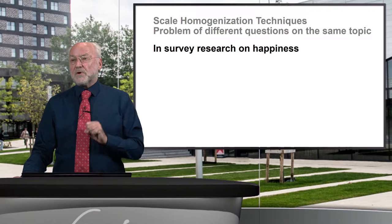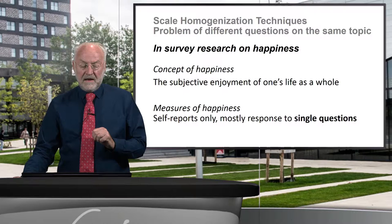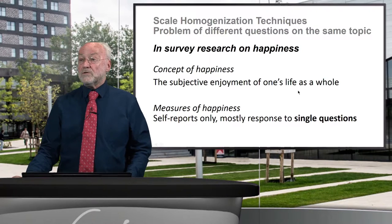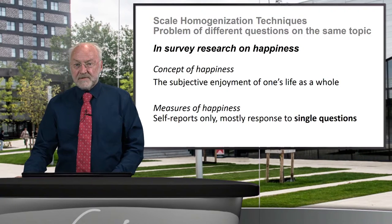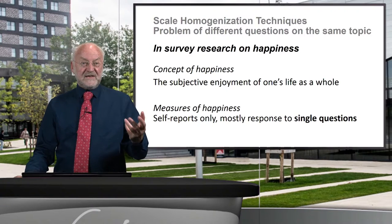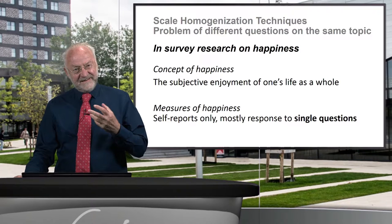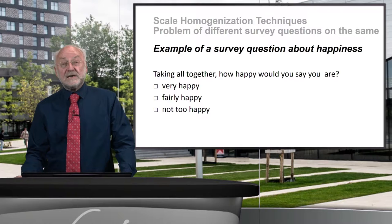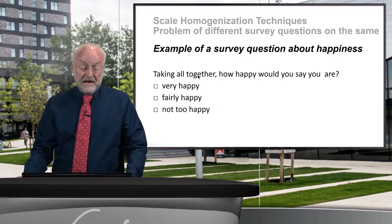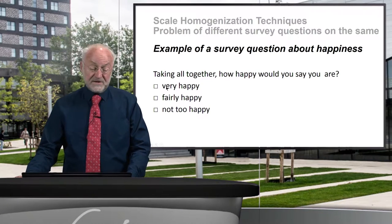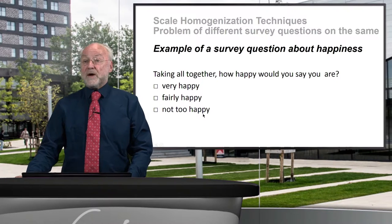Let me illustrate these problems on the case of happiness research. We define happiness as the subjective enjoyment of one's life as a whole. Because people have it on their mind, you can ask them directly in a single question. A commonly used question reads: "Taking all together, how happy would you say you are?" — and people can say very happy, fairly happy, or not too happy.